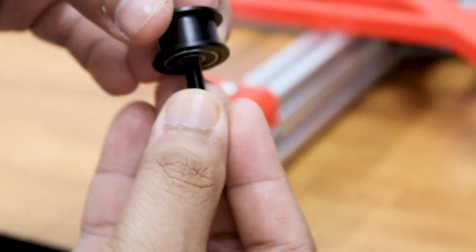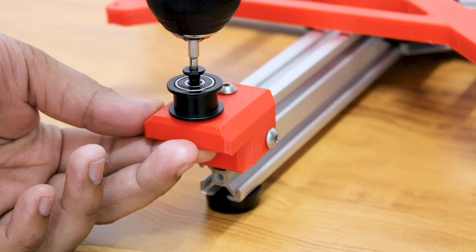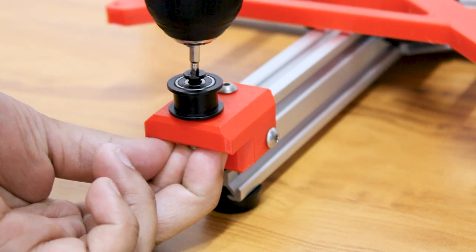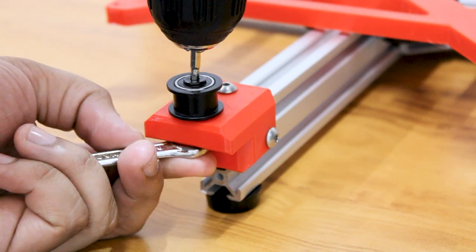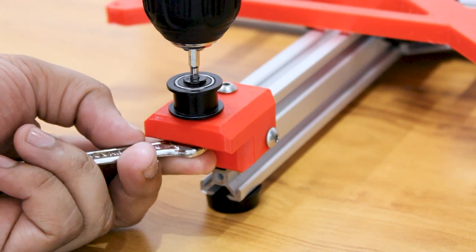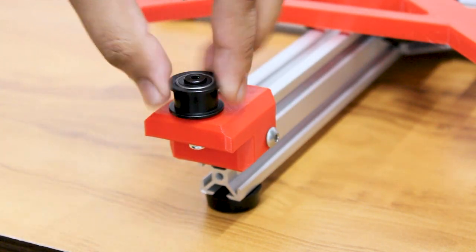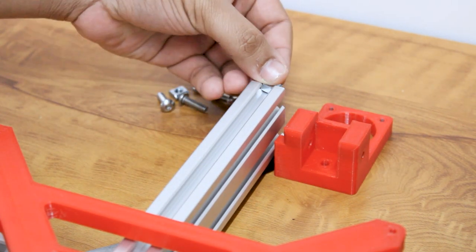Now insert the idler pulley and tighten it with the nylock nut. In the same way, mount the Y-axis backplate for the motor.